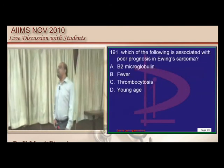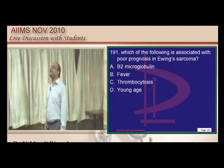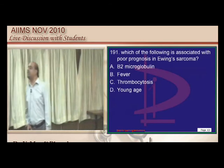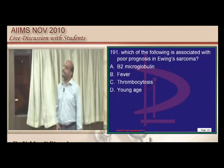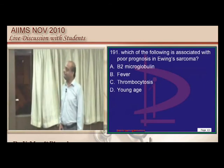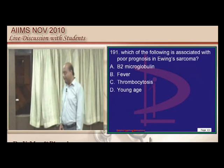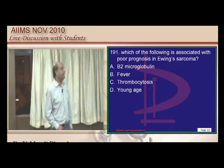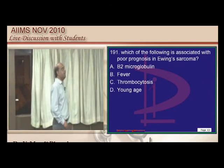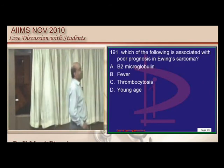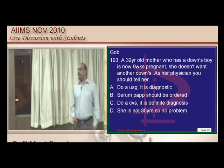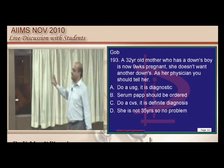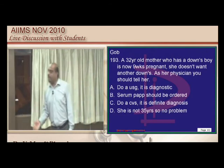In Ewing's sarcoma, beta-2 microglobulin is not a prognostic marker. Beta-2 microglobulin is the single most important prognostic factor in multiple myeloma.